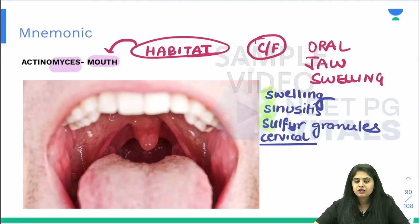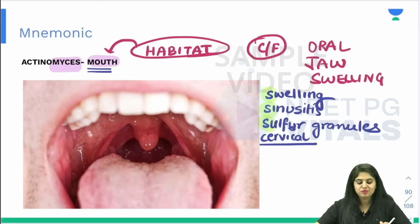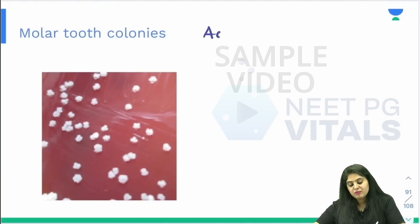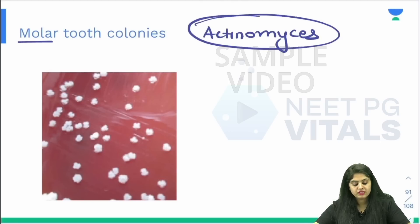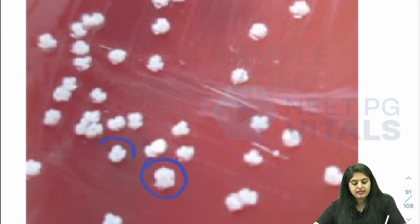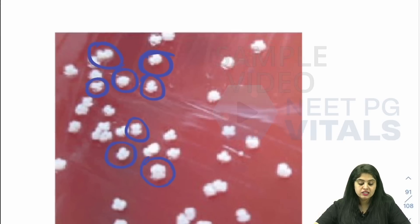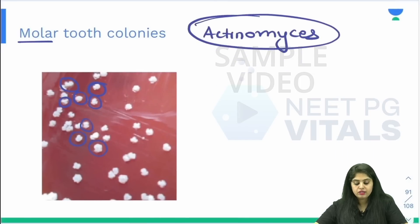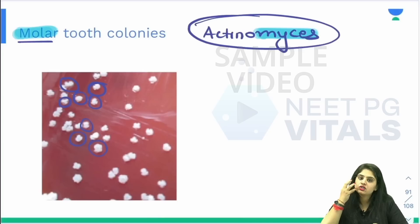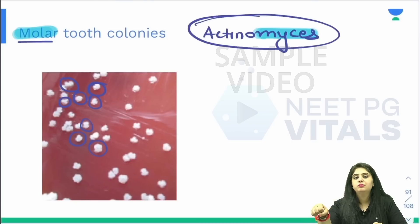What kind of colonies does it show? The mnemonic is mouth — everything is happening around the mouth, so the colonies should also be related to the mouth. It is related to the molar tooth. Actinomyces shows you beautiful molar tooth colonies. They look like tiny molar teeth spread all over. So molar tooth colonies are seen in Actinomyces. When I say Actinomyces, everything is mouth: the natural habitat is the mouth, the location of disease is all around the mouth, and the colonies are molar tooth colonies.